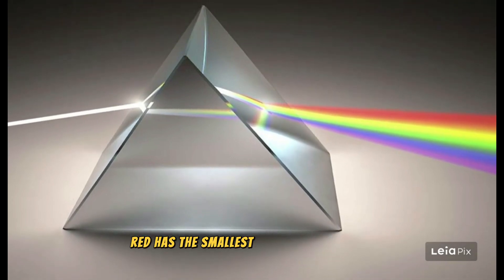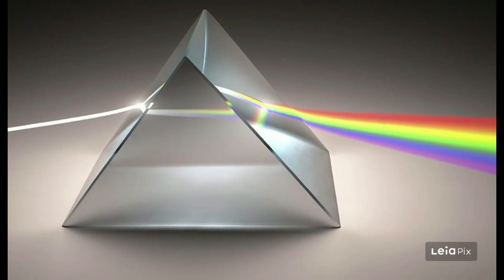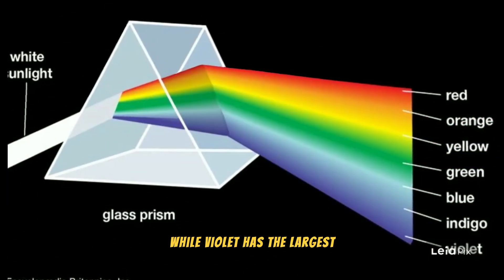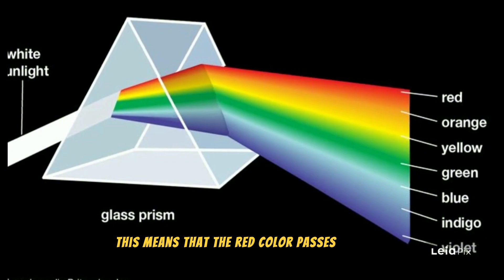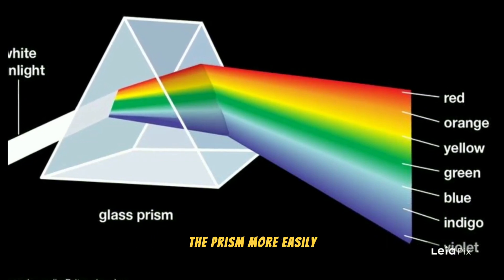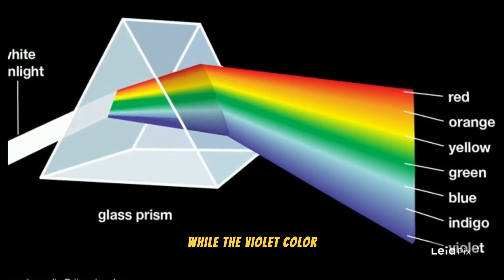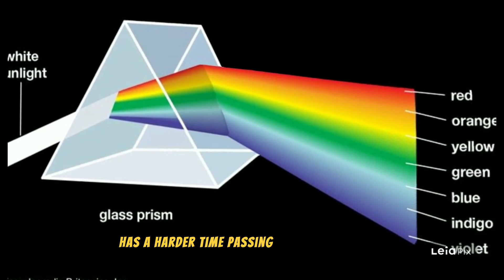Red has the smallest angle of refraction, while violet has the largest. This means that red passes through the prism more easily, while violet has a harder time passing through the prism.